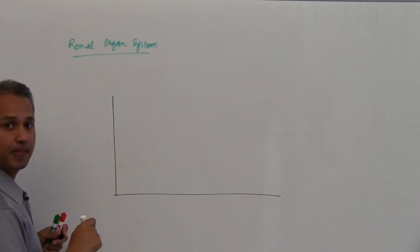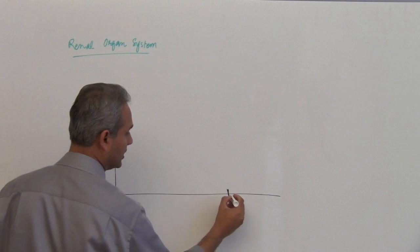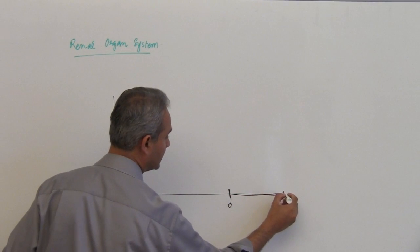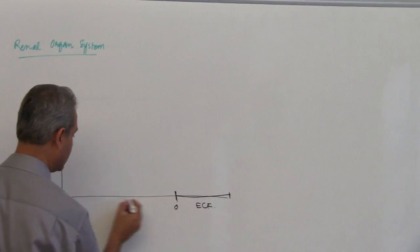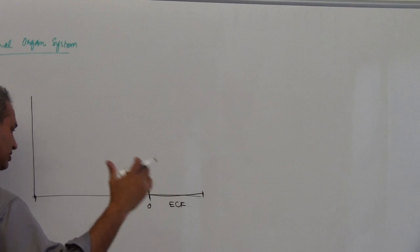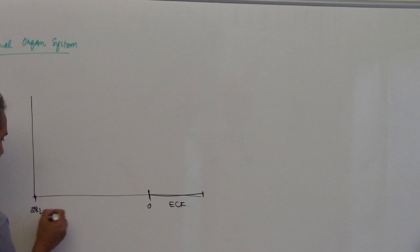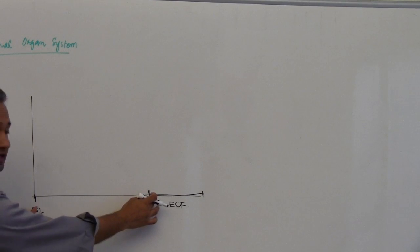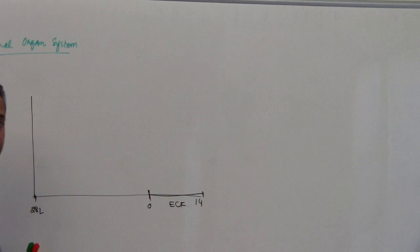So x-axis is our volume. So let us say this is zero, and from here to here is extracellular fluid volume, and from here to here is intracellular fluid volume. So 70 kilogram normal, so this would be 28 liters from here to here, 28 liters, and this will be 14 liters.